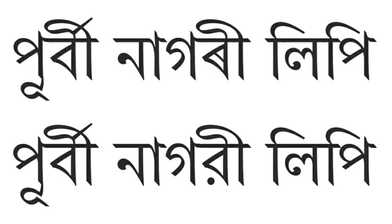In addition to differences in how the letters are pronounced in the different languages, there are some minor typographical differences between the version of the script used for Assamese and Bengali languages. The Eastern Nagari script was originally not associated with any particular regional language, but was prevalent as the main script in the eastern regions of medieval India. The script was also used to write Sanskrit.